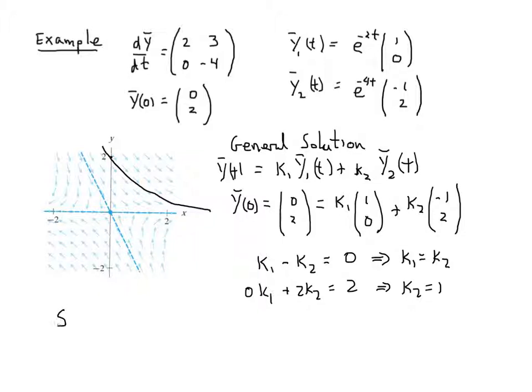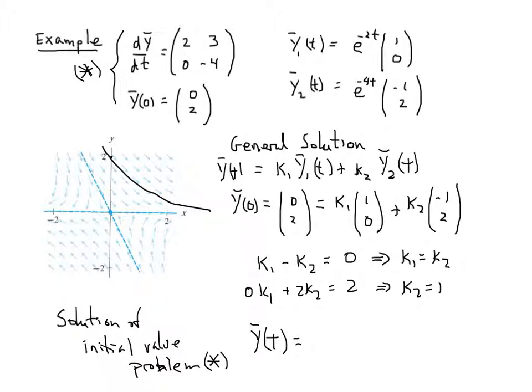The solution of the initial value problem, which I'll refer to up here as star, is the vector-valued function y(t), made up of k₁, which is 1, and k₂, which is 1—k₁ times y₁, k₂ times y₂—which is none other than e^(2t)(1, 0) and e^(-4t)(-1, 2).